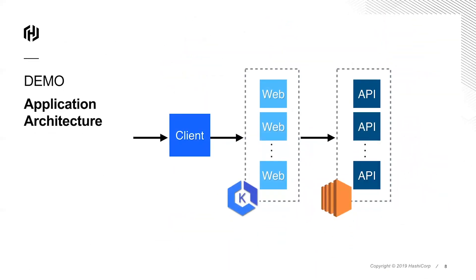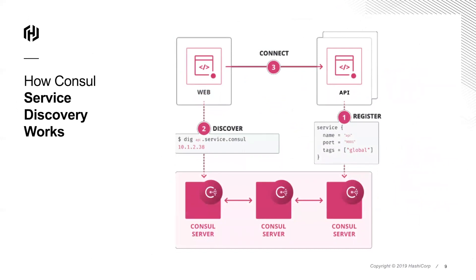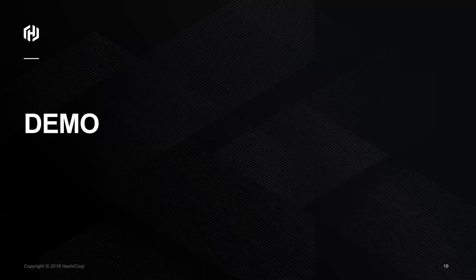For our demonstration today, we have a simple two-tier application with a web front-end running in a managed cloud Kubernetes service, communicating with a back-end API service running on traditional cloud instances in an autoscaler group. We're going to show services registering via a JSON definition file and automatically registering from within Kubernetes. Services can then query Consul via DNS or the API to discover and send traffic to each other, making a direct connection without relying on any traditional east-west load balancer.